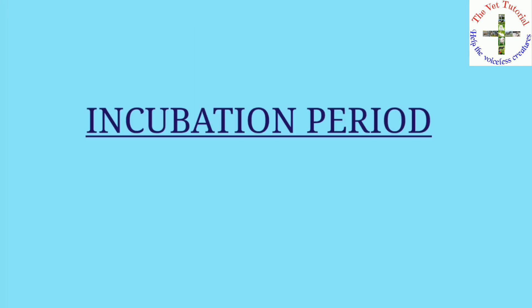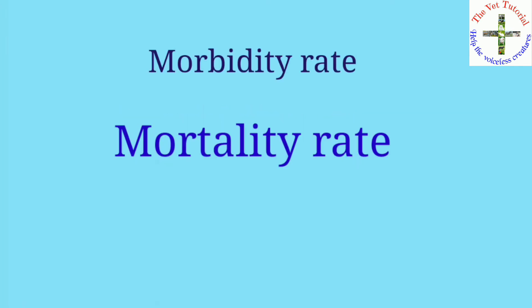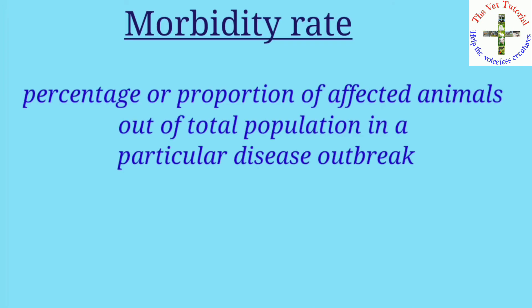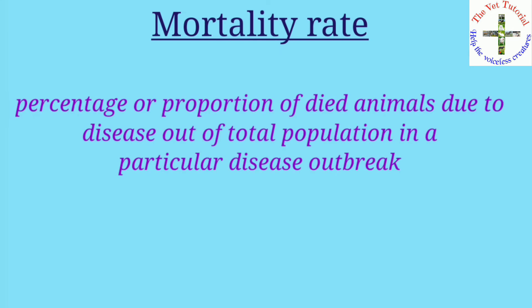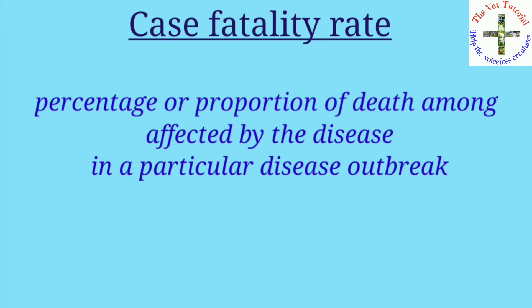The incubation period is the time lapse between the action of a cause and the manifestation of the disease. Morbidity rate is the percentage or proportion of affected animals out of the total population in a particular disease outbreak. Mortality rate is the percentage of animals that died due to the disease out of the total population. Case fatality rate is the percentage of deaths among the animals affected by the disease.